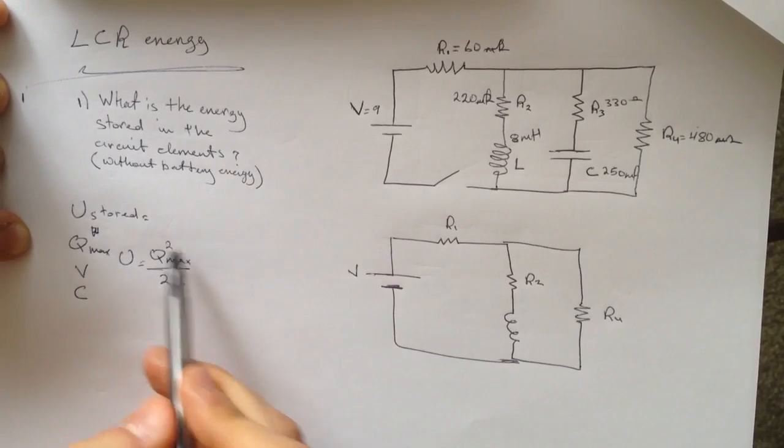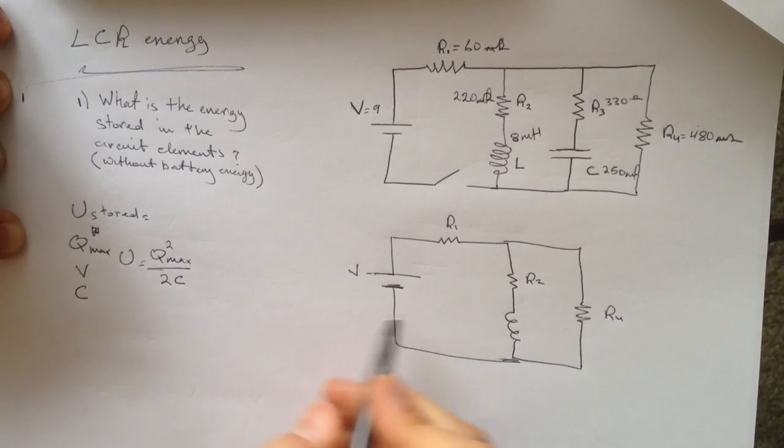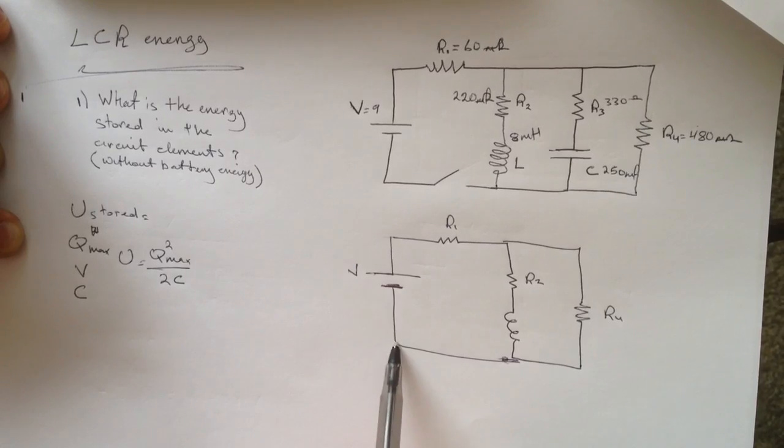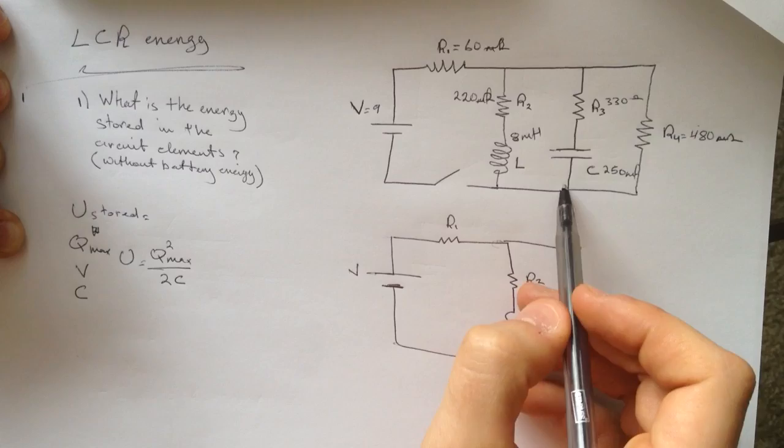So we have the C, we need to find the Q max. How would we find that? Let's find the voltage across, across here, from here to here, because it's going to be the same as from here to here.